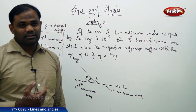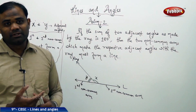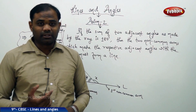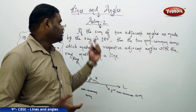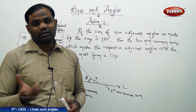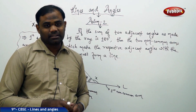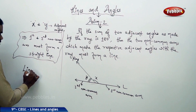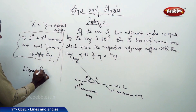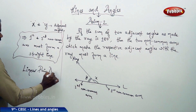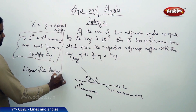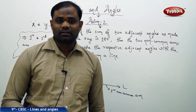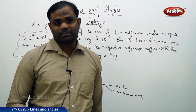Axiom 2 and its definition: the two axioms discussed in this session — axiom 1 and axiom 2 — are very much related to linear pairs. Therefore, the two axioms related to the linear pairs are called linear pair axioms. Just to make a note: the two axioms we have discussed are called linear pair axioms, and that is how we define the axioms and their respective linear properties.